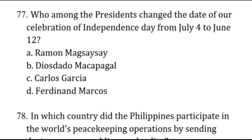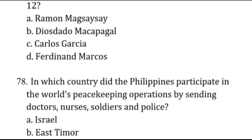Who among the presidents changed the date of our independence celebration from July 4 to June 12? July 4, 1946 was independence from the Americans, and June 12, 1898 was independence from Spain. It was Diosdado Macapagal who signed that into law.